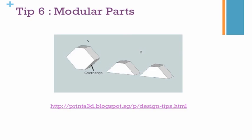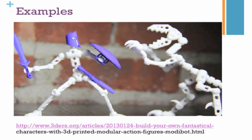The last tip is making parts modular. In part A you can see an entire object, while in part B the object is split into two. This ensures your part requires no support, helping avoid the problems mentioned previously. It is a very good approach for very complex and large-scale parts. For example, this toy is made from a number of 3D printed parts — by making parts modular you can create very complex movable objects.